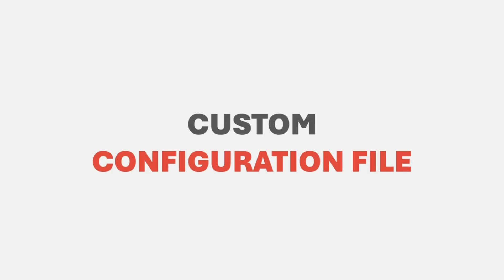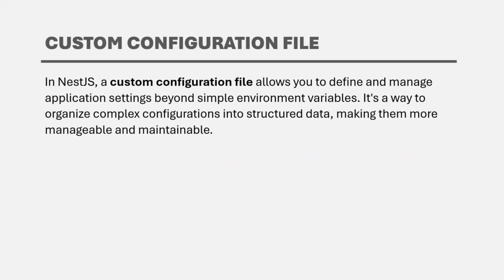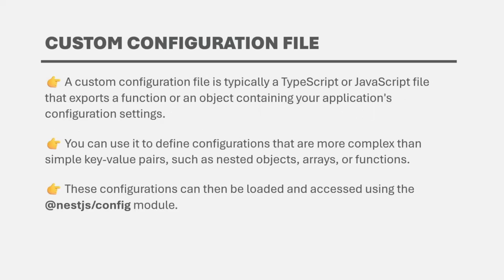In this lecture, we are going to learn about custom configuration files and understand why we might want to create one and use it in our NestJS application. A custom configuration file allows you to define and manage application settings beyond simple environment variables. It is a way to organize complex configurations into structured data, making them more manageable and maintainable. A custom configuration file is typically a TypeScript or JavaScript file that exports a function or an object containing your application's configuration settings, and it can be loaded and accessed using the @nestjs/config module.